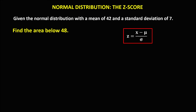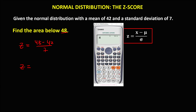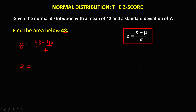For the next given, we need the area below 48. Convert to Z-score: Z equals 48 minus 42, divided by 7. That gives us 0.86.